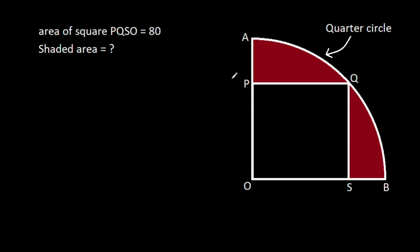In this video, we have been given a quarter circle and the area of square PQSO is 80. We have to find the shaded area.